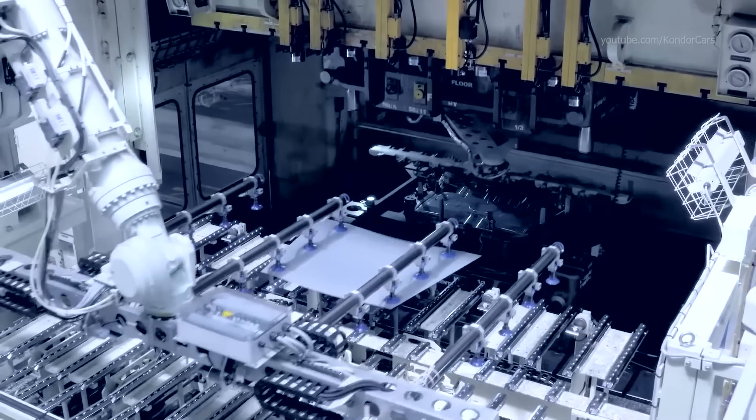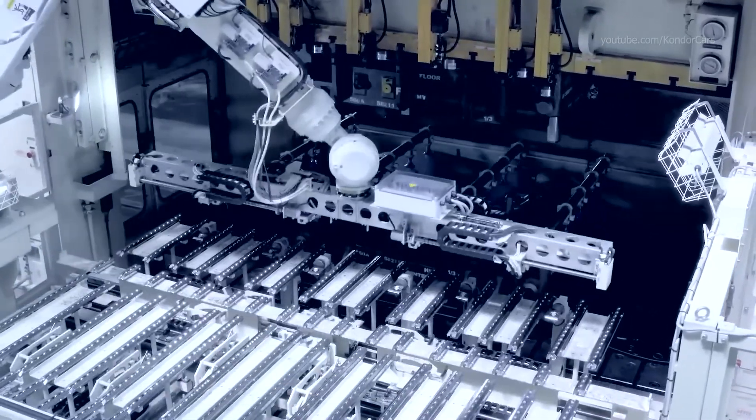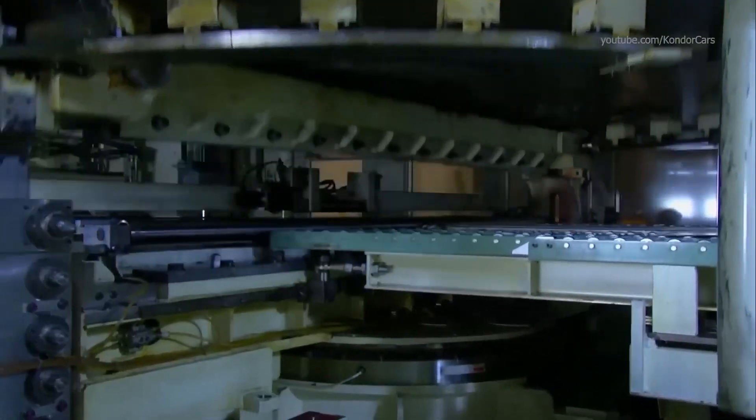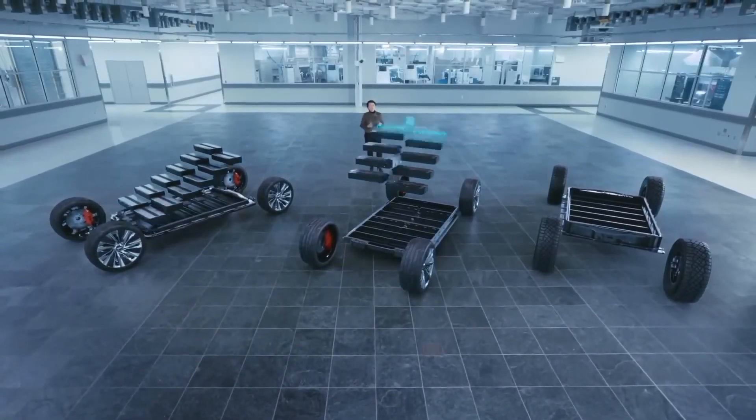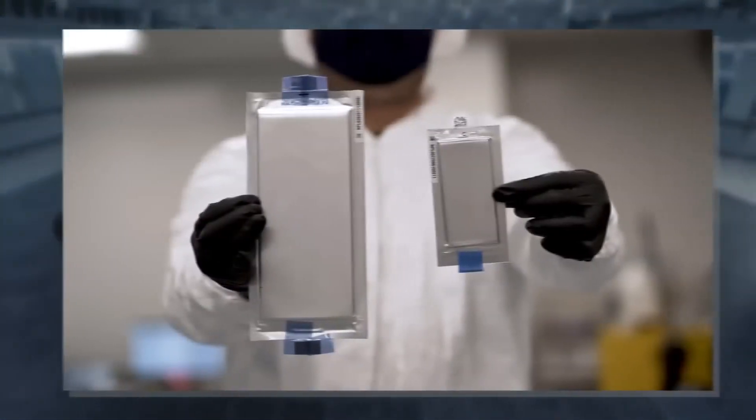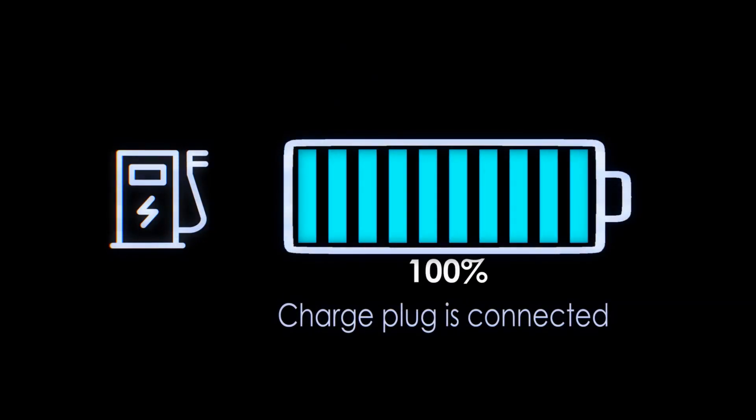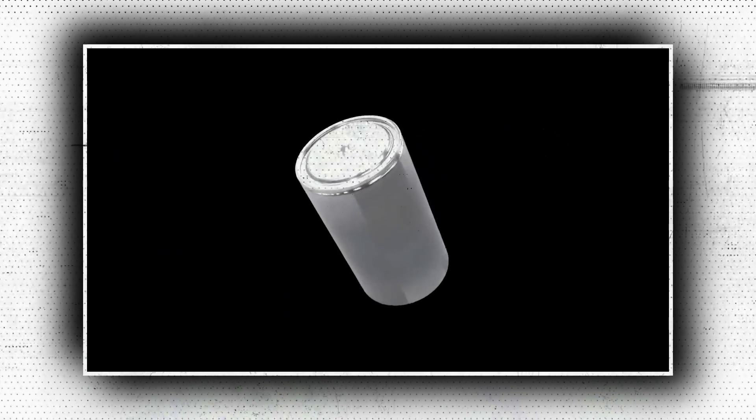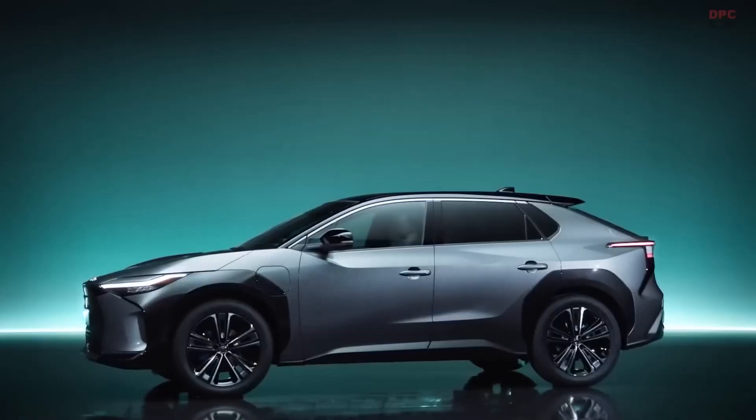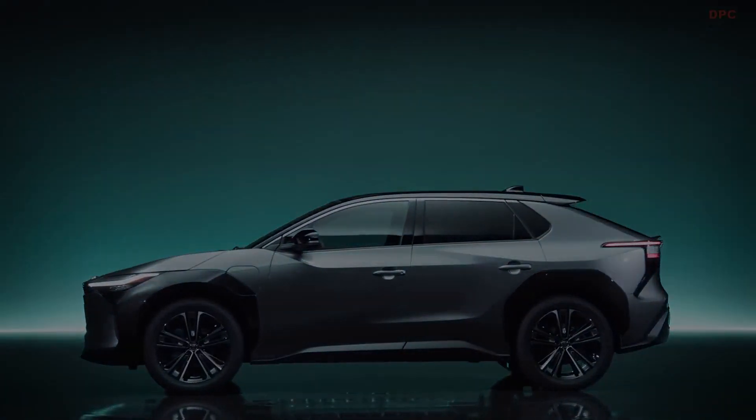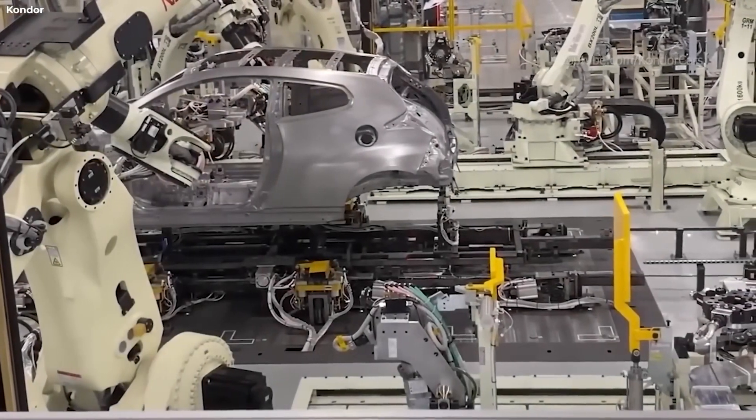Toyota announced a sort of technology roadmap and stated that by 2026, it will be releasing a more robust, energy-dense nickel-cobalt-manganese lithium-ion battery with a range of 621 miles and a quick charge time of 20 minutes. Although Toyota has a strategy for its lower-end models as well, these BZ4X-adjacent NCM batteries will only be used in high-end luxury or performance vehicles.